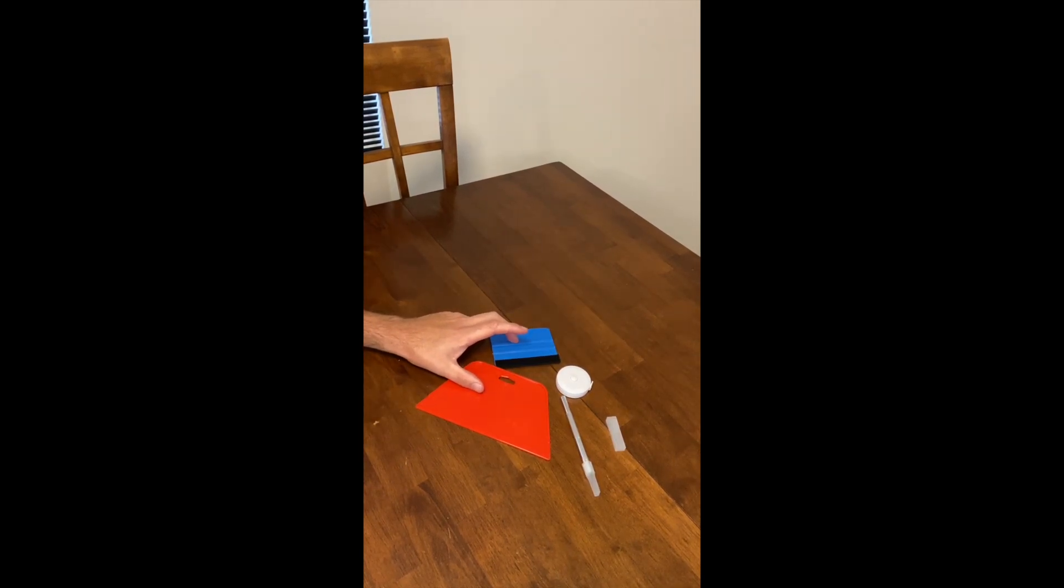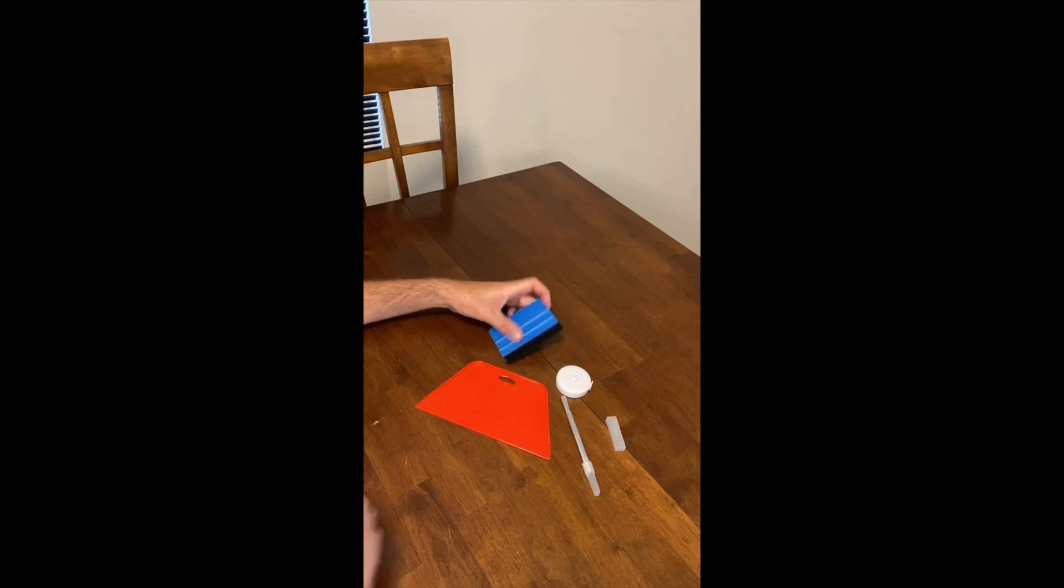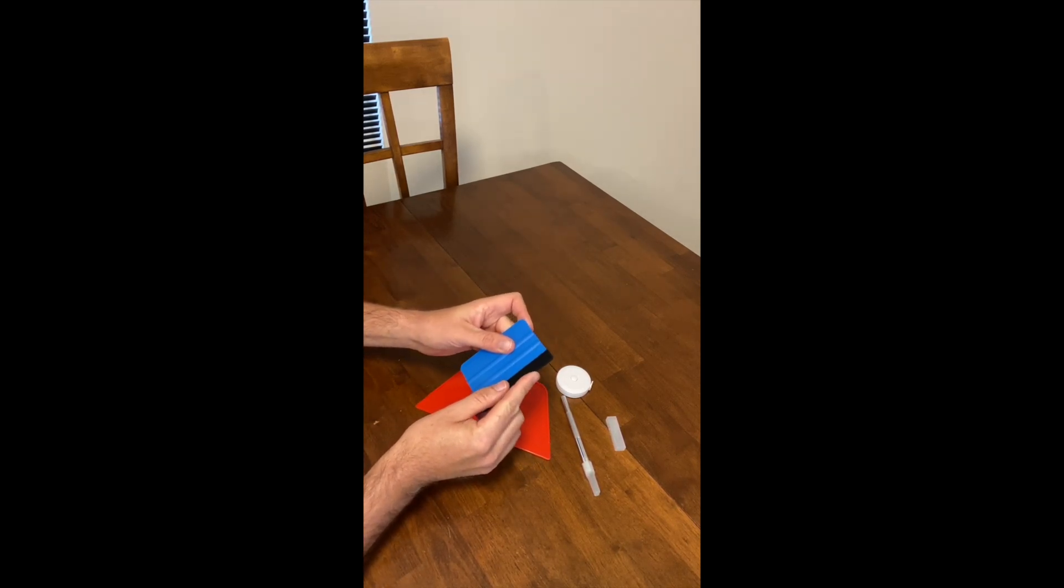The red and blue smoothers work well for smoothing out bubbles and creases. The blue one with the felt is better for finesse areas.